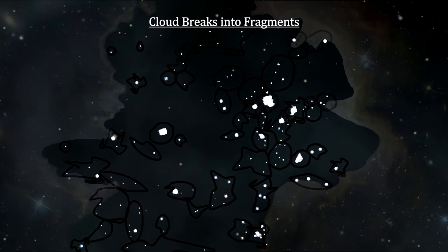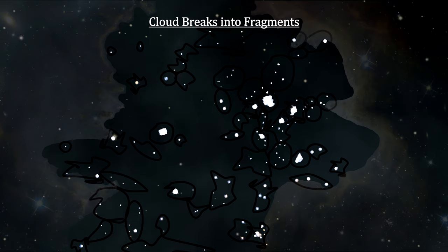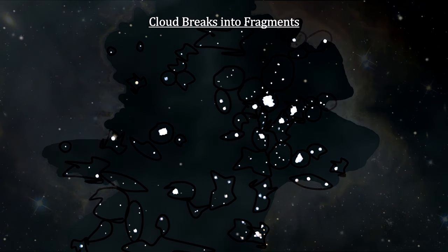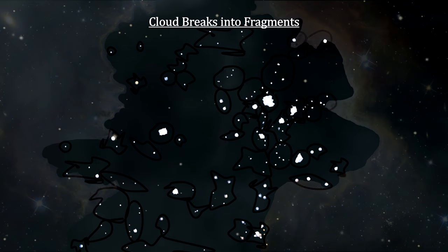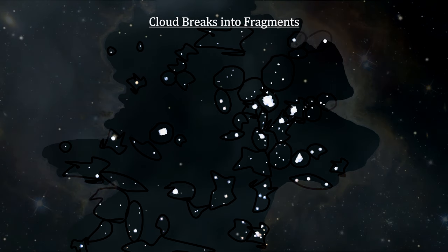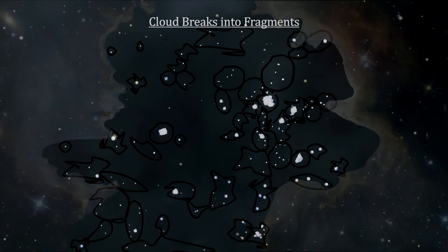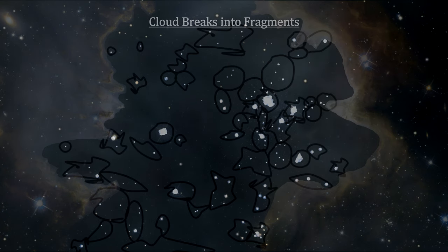Each of these fragments continue to collapse. Over a 20 million year period, they form planet-sized objects, brown dwarfs, and stars of all masses. In this way, collapsing giant molecular clouds create star clusters.